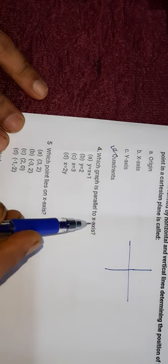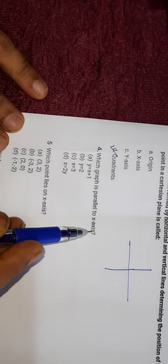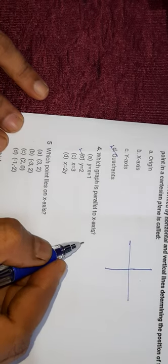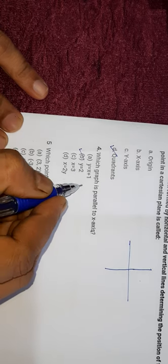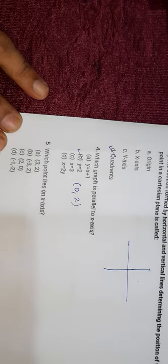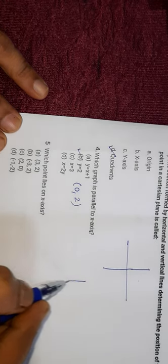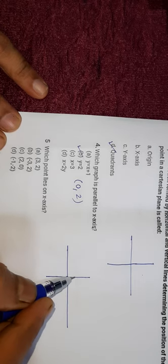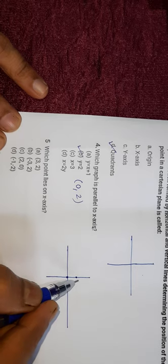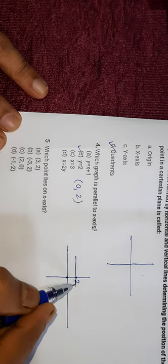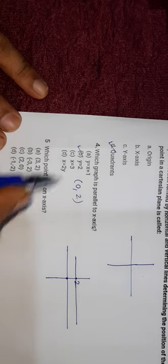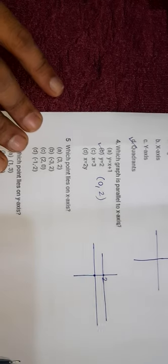Question number four: which graph is parallel to the x-axis? The answer is y = 2. If y = 2, the coordinates will be (0, 2). You plot 0 on the x-axis and 2 on the y-axis, and you get a line parallel to the x-axis.